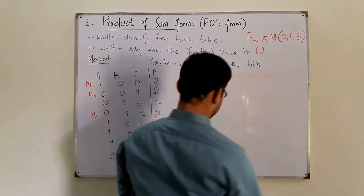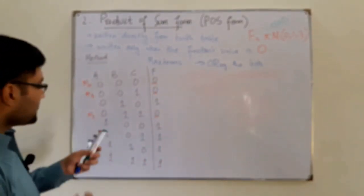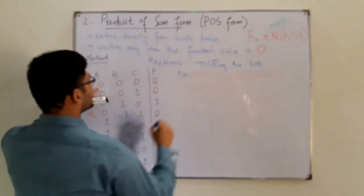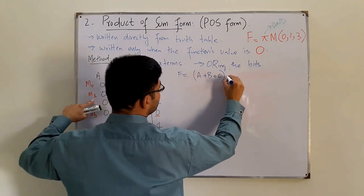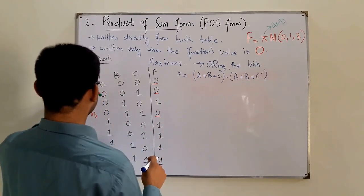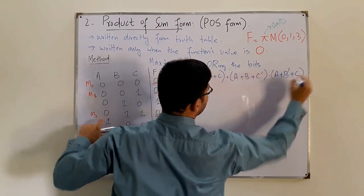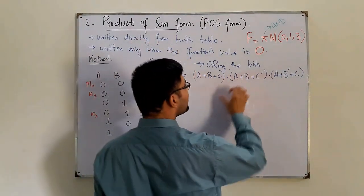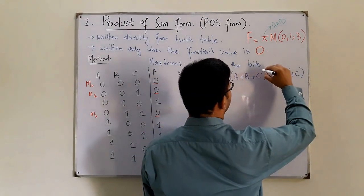So we can write this function as a product of max terms 0, 1, and 3, where the pi symbol represents the AND operation. Therefore f equals (a + b + c) AND (a + b + c complement) AND (a + b complement + c). This form obtained directly from the truth table with all variables present is called the standard or canonical POS form.